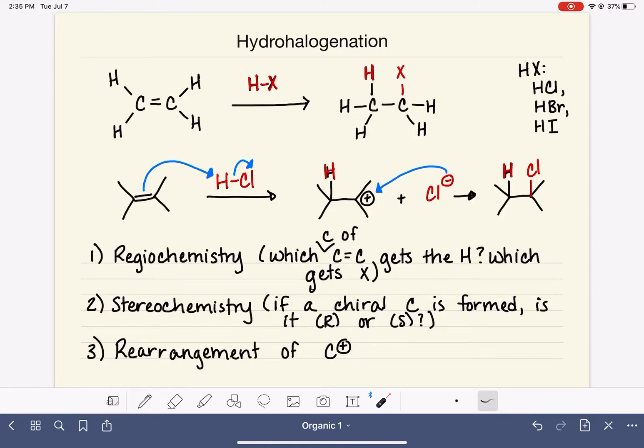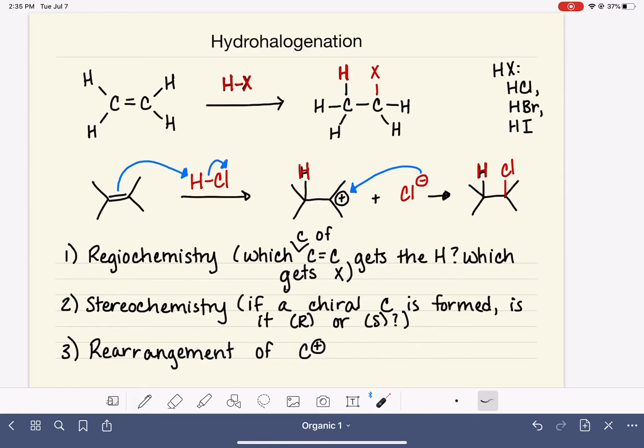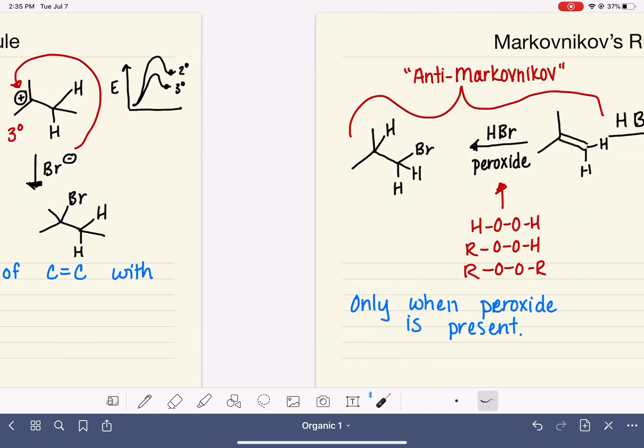If the hydrohalogenation reaction produces a chiral carbon in our product, will that carbon have R stereochemistry or S stereochemistry? For this, we're going to look at an example. We will work with this particular alkene, and let's add HCl to our alkene.